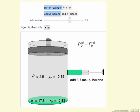So it's a hexane-octane mixture, ideal solution, and then we're going to add hexane. We could also select instead add octane.